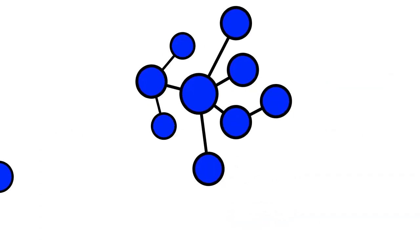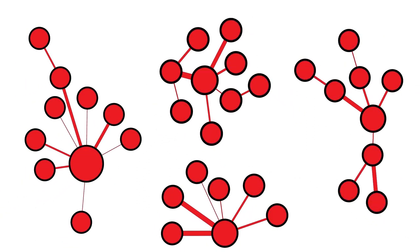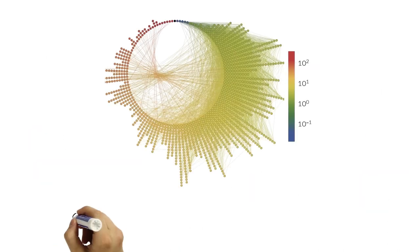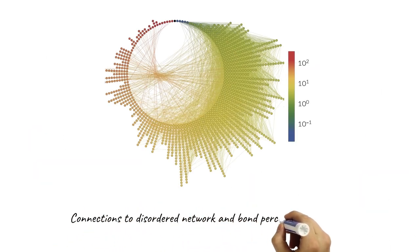We estimate stochastic epidemic properties from a finite sample of edge-weighted networks. Our framework has connections to disordered network and bond percolation theory.